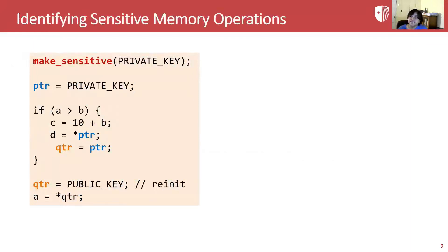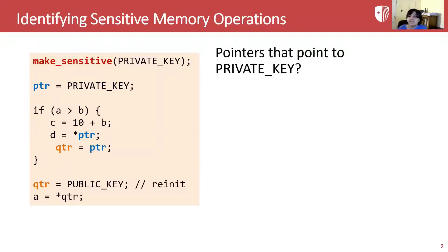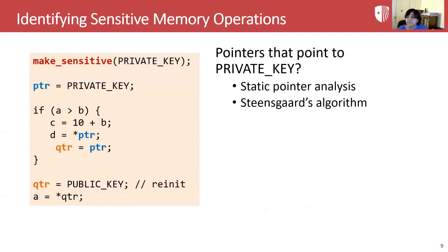Consider this simple example inspired by the OpenSSL codebase. The programmer annotates the private key as sensitive. Our analysis can then automatically find all pointers that point to the private key. For this purpose, we use the static analysis technique of pointer analysis. We use Steensgaard's algorithm, which is the fastest pointer analysis algorithm and has linear complexity. Using pointer analysis, we can identify that both pointers PTR and QTR may point to the private key.